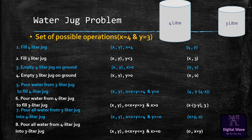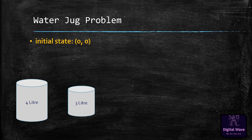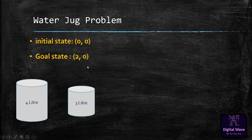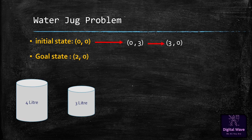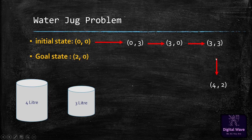Now we will solve the problem step by step. The initial state (0, 0) shows both jugs are empty. To achieve the goal state (2, 0), we first fill the 3-liter jug, then pour that water from the 3-liter jug into the 4-liter jug. In the next step, we fill the 3-liter jug again.